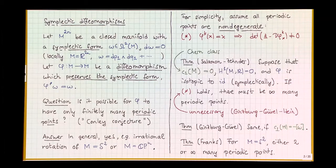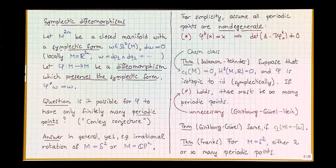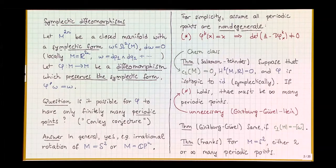Even though it seems an elementary question about dynamics, the global topology of the manifold plays an important role, in a way which we frankly do not understand. For S2, the dynamics of area-preserving homeomorphisms of surfaces is a big area in itself: one celebrated theorem says that either you have two periodic points, just like the irrational rotation, or you have infinitely many. Big efforts are underway to understand what this means in higher dimensions.